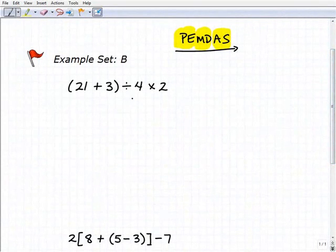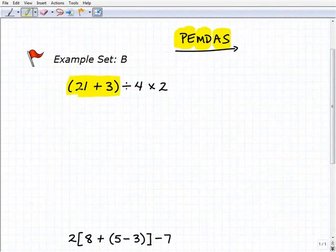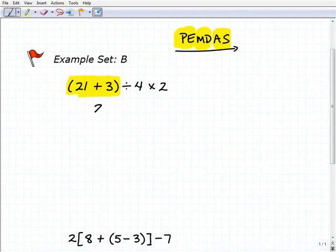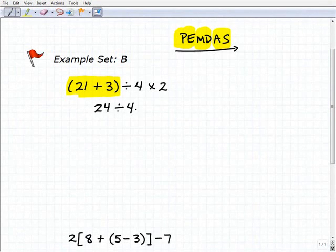And so I look at my first problem. I'm looking for parentheses or grouping symbols. And of course, I have them right here. So I have to do what's inside of the parentheses first. So I have 21 plus 3. Of course, that's going to be 24 divided by 4 times 2. So I'm done there.